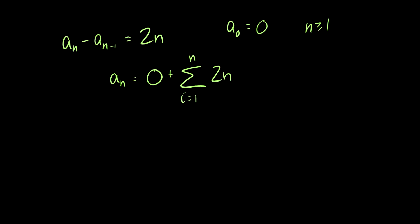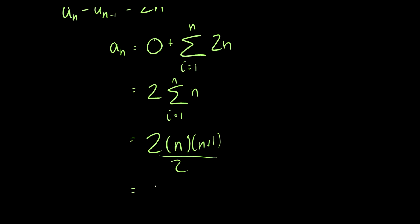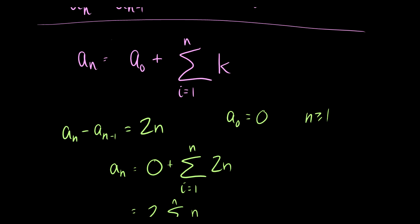We can simplify this and say this is 2 times the sum of i equals 1 to n of n. We just factor out the 2 and this is equal to 2 times n times (n+1) all over 2, which we know cancels, and we get n times (n+1). So this is another little formula for recurrence relations that is pretty important.